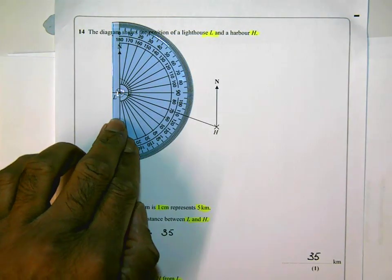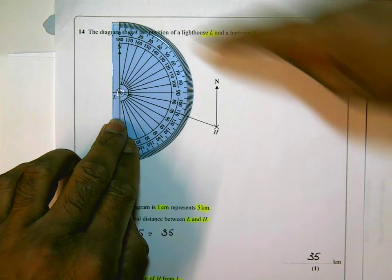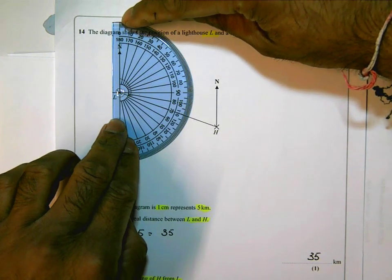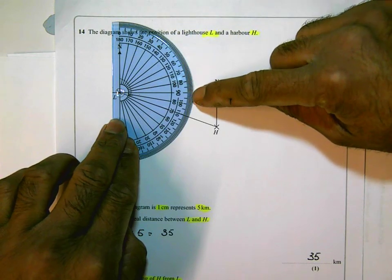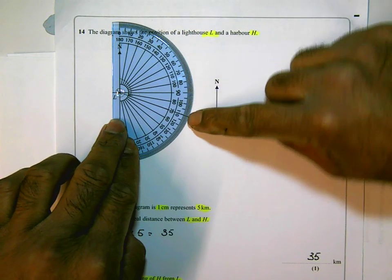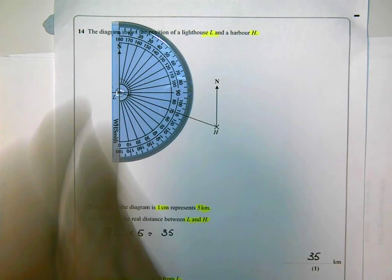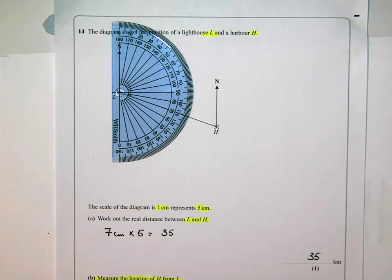And looking at the angle starting from zero at the top, and I'm using the outside scale: 10, 20, 30, 40, 50, 60, 70, 80, 90, 100, and it's bang on 110.